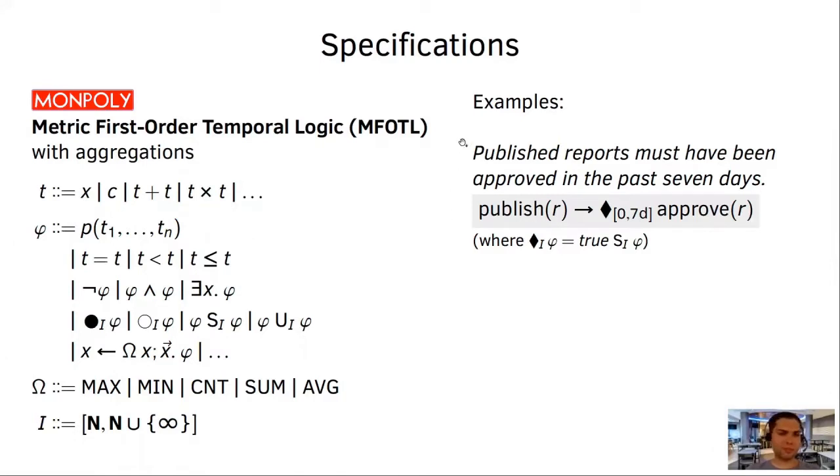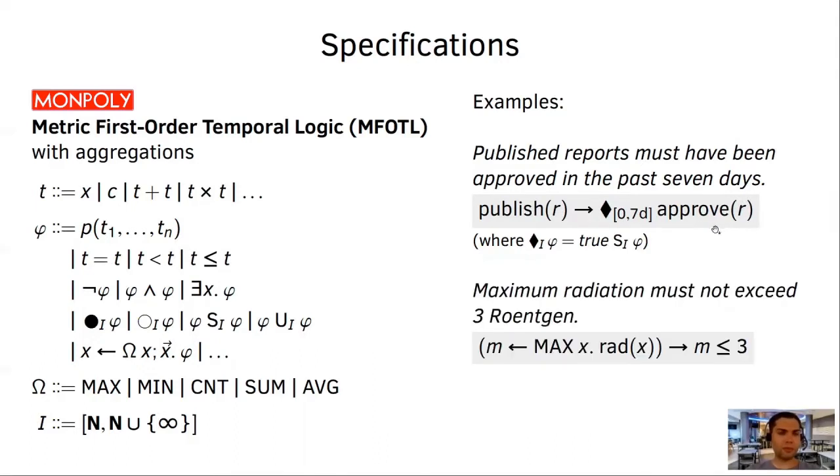Here, let me briefly show you some examples. So, with mFOTL, you can easily formalize policy such as published reports must have been approved in the past seven days. The corresponding formula, you can see here. For every published report R, there must have been once in the past, that's the black diamond operator, a corresponding approve. And note how we use the variable R to match the events of one report. With aggregations, we can express properties such as the maximum radiation must not exceed three RENTGEN. And here you can read the formula as follows. Whenever m is this maximum radiation X, then m must be at most three.